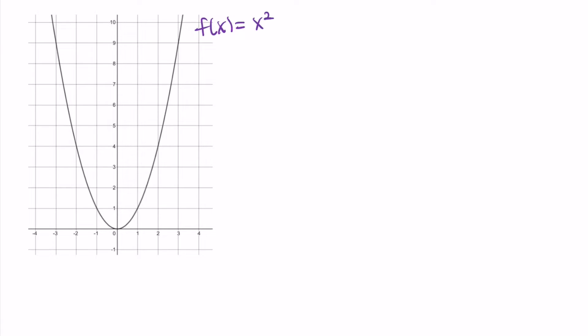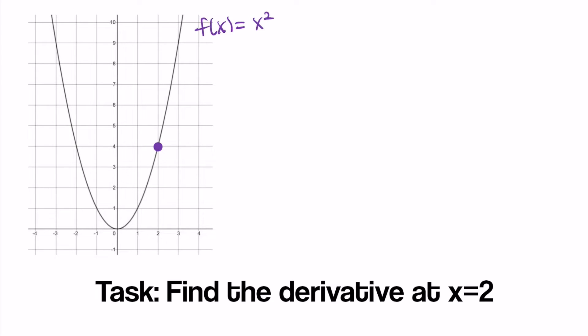Now I want to give you a chance to repeat this process on your own. Let's draw that graph again. This is f of x equals x squared and now I want to look at the point x equals 2. What I'd like you to do is to find the derivative at x equals 2 or find the slope of the tangent line at x equals 2. So pause the video now, give this a shot, and come back and we'll do it together.